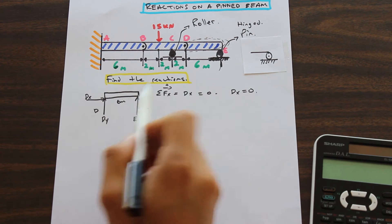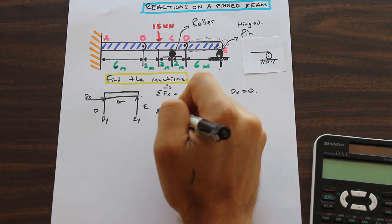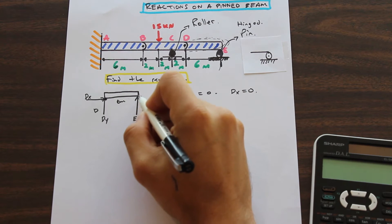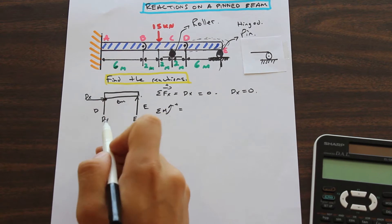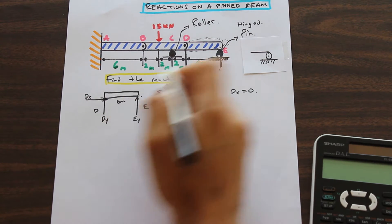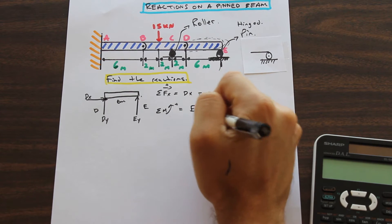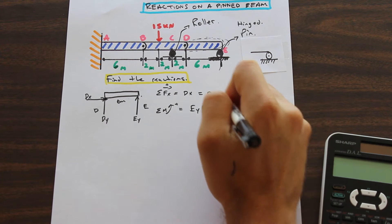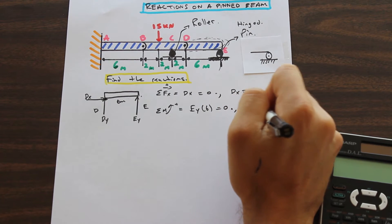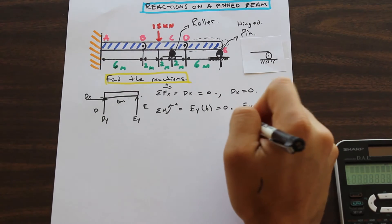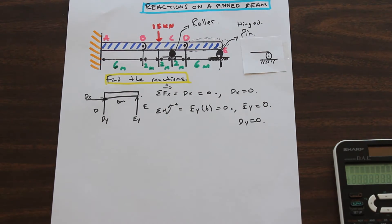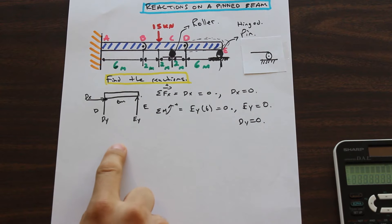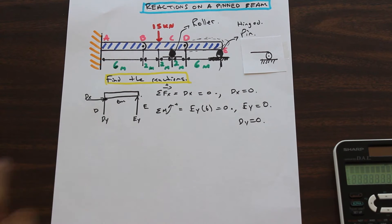By taking the moment at point D, in the positive direction, we don't use D in our moment equation because there's no distance to D. We have EY times six, and we don't have any other forces, so that's equal to zero. That means EY is equal to zero, and if EY is equal to zero, DY has to be equal to zero as well. So the reaction at E is zero, and the reaction at D is zero in both the X and Y directions.